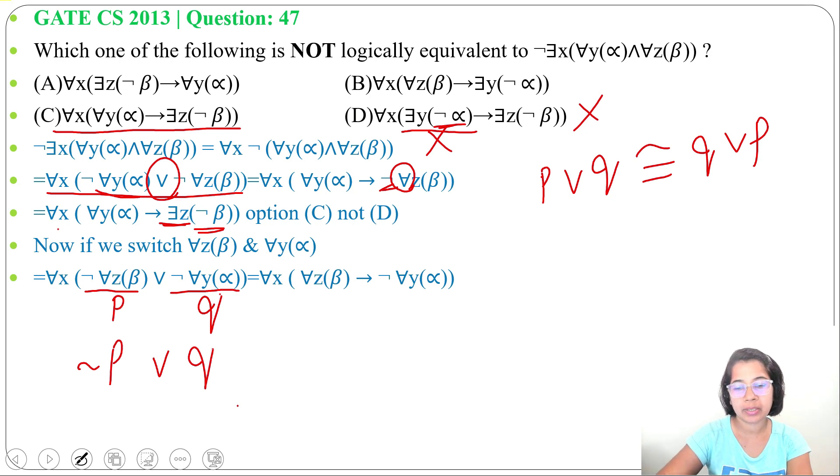We can write P implies Q. So it will be for all Z beta implies negation of for all Y alpha.